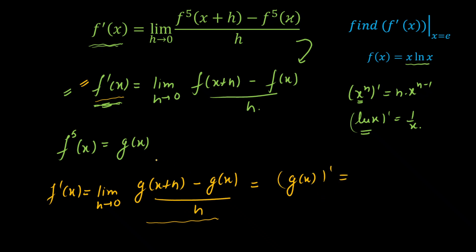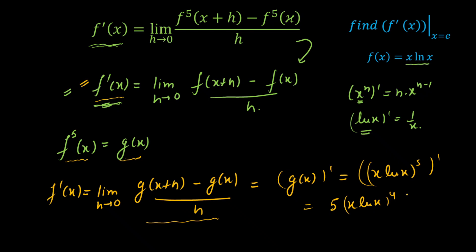Indirectly, the question is asking for g'(x) where g(x) = [x·ln(x)]^5. Differentiating: g'(x) = 5·(x·ln x)^4 · (ln x + 1), applying the power rule and product rule. Now substituting x = e: g'(e) = 5·(e·ln e)^4·(ln e + 1) = 5·(e·1)^4·(1 + 1) = 5·e^4·2 = 10e^4. So the final answer is 10e^4.